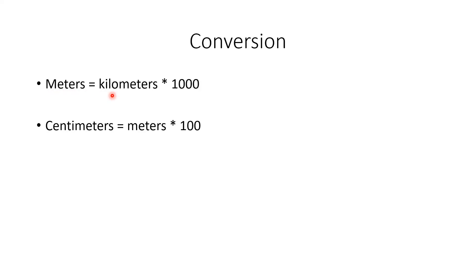Once we get the meters by multiplying the kilometers by one thousand, we already have the meters. Since one meter consists of one hundred centimeters, we multiply the meters by one hundred to get the centimeters. This is how the unit conversion works and this is the logic we are going to use in our program.